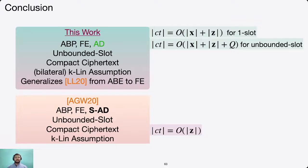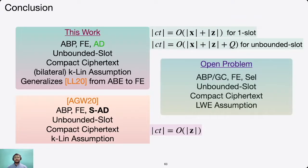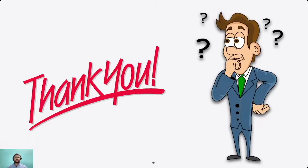Therefore it is an interesting open problem to investigate a functional encryption scheme with adaptive simulation security where the ciphertext size grows only with the size of the private part of the message. Another open problem is to construct FE for general circuits or EVPs with selective security, unbounded slots, and compact ciphertext based on a reasonable assumption. Thank you; if you have any questions you can discuss during the Q&A.